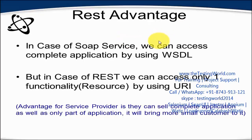Let me take an example of a tax calculation application. This web service supports income tax, sales tax, service tax, and many other taxes. If that service is developed in SOAP, as a customer I have to buy the complete service because there is no option to purchase only one or a few functionalities. But in the case of REST, I can approach the company and buy only one functionality by using URI. So ultimately, as a service provider, the company can approach more small customers and get more benefit out of it.